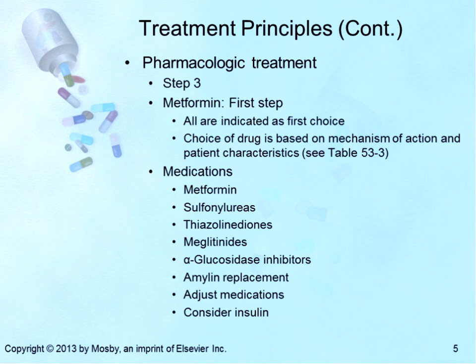The meglitinides are short-acting secretagogues that stimulate insulin secretion. They are used to decrease postprandial blood sugars and are taken only with meals. When taken correctly, the risk of hypoglycemia is very low. They are especially useful in patients who have fairly low fasting blood glucose levels but high postprandial glucose levels. Although relatively safe, they are rather weak and are used in mild diabetes as an adjunct. Cost is another reason these drugs are considered second-line agents. Maximum doses reduce hemoglobin A1C by approximately 0.5 to 1.3%.